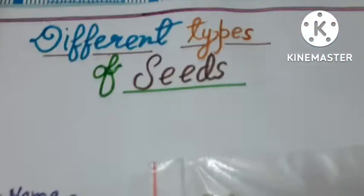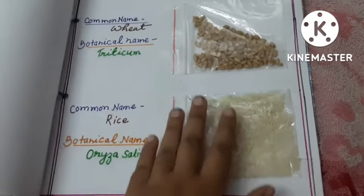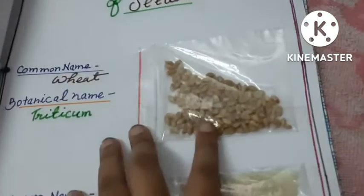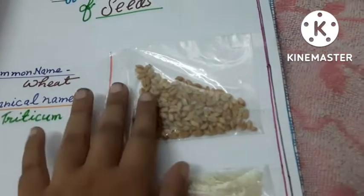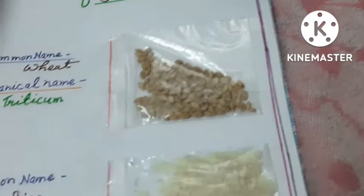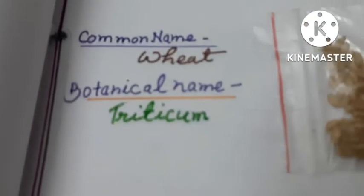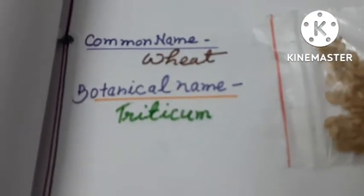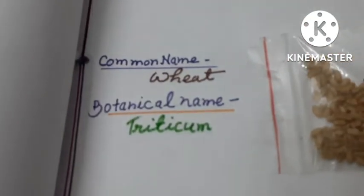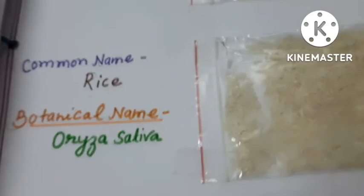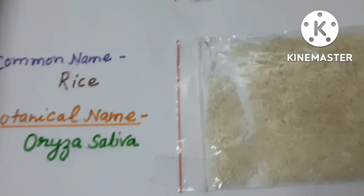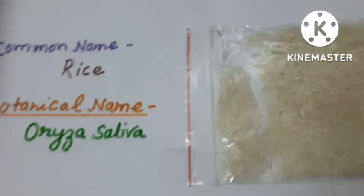Here I have written about different types of seeds. I have filled the seeds of wheat in a cellophane bag and written its common name wheat and botanical name puticum. And here I have filled the rice.